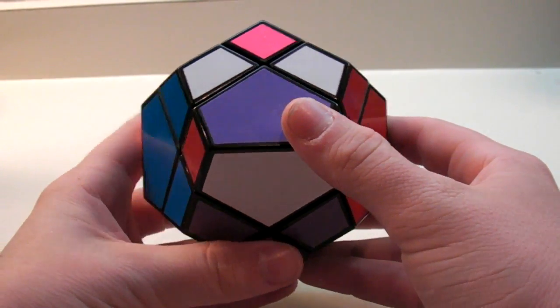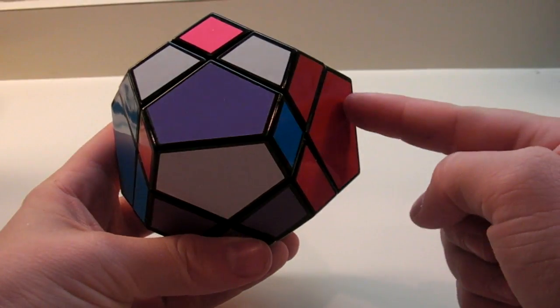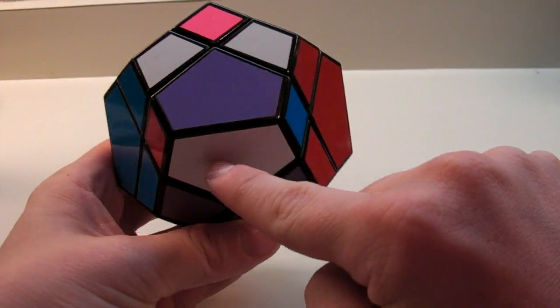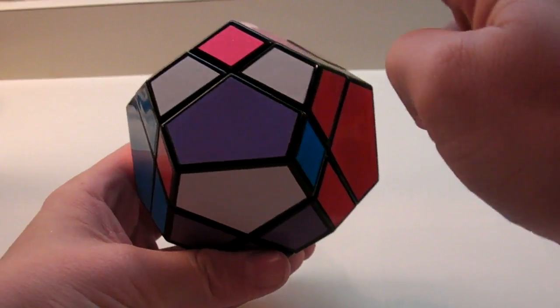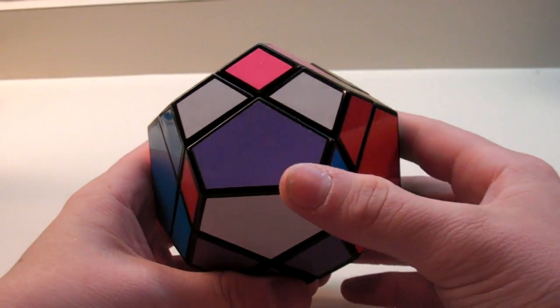When performing this algorithm six times, it will turn this center, this center, this center, and this center 180 degrees.